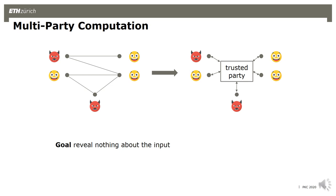One can ask what other aspects the protocol could leak. For example, if you think of broadcast, what about the sender of the message or the receiver? Topology-hiding computation looks at one particular such aspect, which is the network topology.